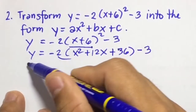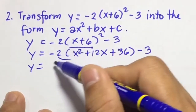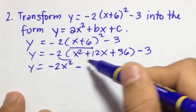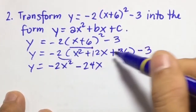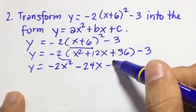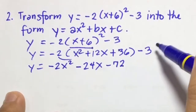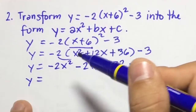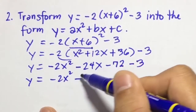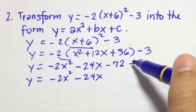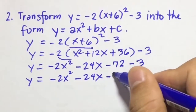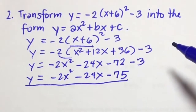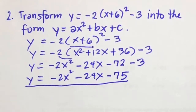Then multiplying: y equals negative 2 times x squared is negative 2x squared. Then negative 2 times 12x is negative 24x. Then negative 2 times 36 is negative 72, then minus 3. So y equals negative 2x squared minus 24x, then negative 72 minus 3 is negative 75. So your answer is y equals negative 2x squared minus 24x minus 75.